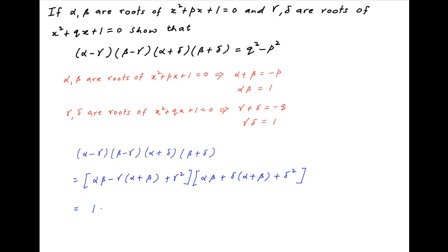Now, alpha·beta is equal to 1 and alpha + beta is equal to minus p. Therefore, this expression is equal to (1 + p·gamma + gamma²) multiplied by (1 minus p·delta + delta²).